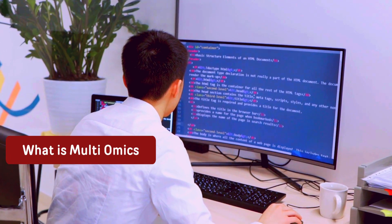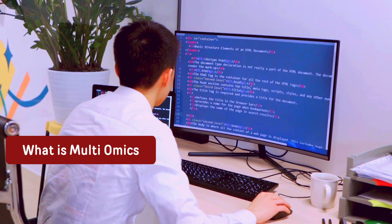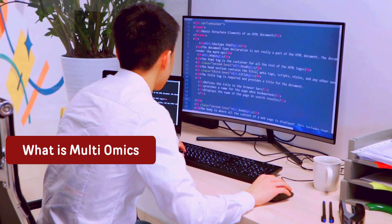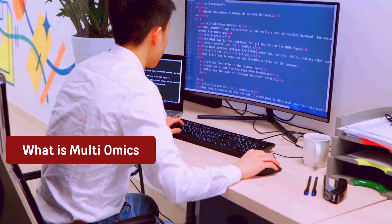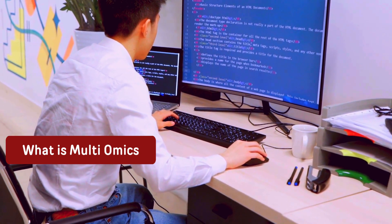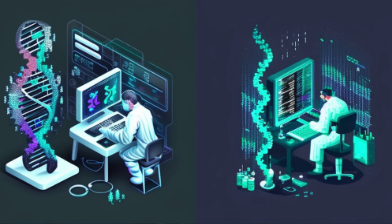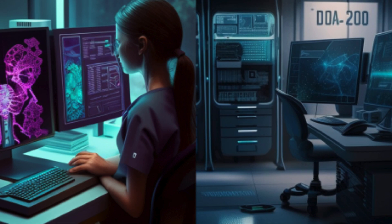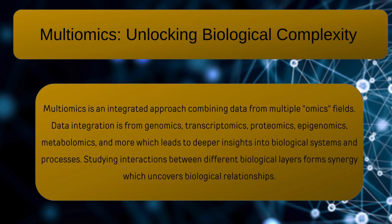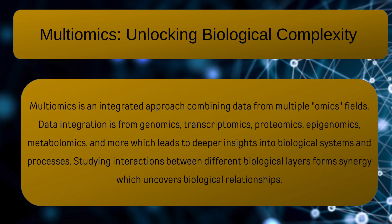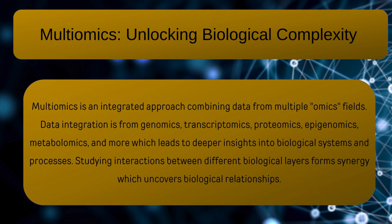Let's talk about the big picture here. Multiomics is basically combining different sets of information to understand how living things work. We are talking about looking at genes, proteins, how genes are turned on and off, and many more tiny molecules inside the cells. By combining all this information, we can start to see how everything connects and influences each other. It's like solving a giant puzzle to understand the complexity of life.